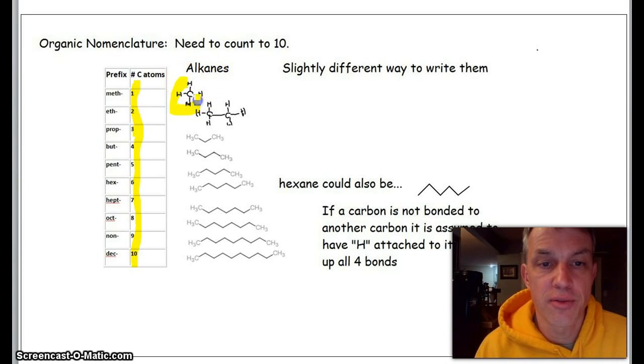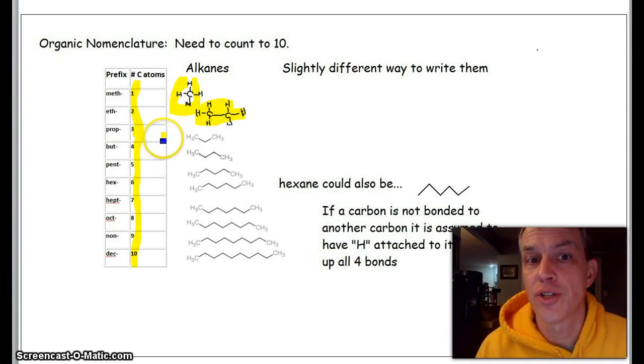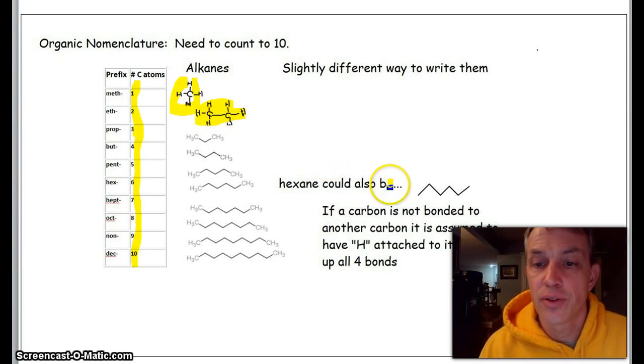Ethane—again, a carbon bonded to a carbon. It's two carbons and the rest are H's. Now, if we keep on doing this, we'll get really tired of drawing out all those H's, so scientists tend to take a shortcut.